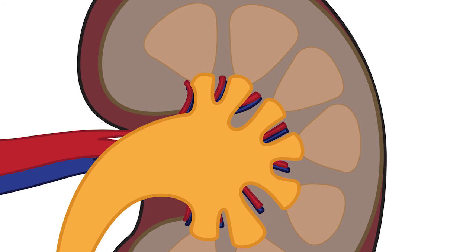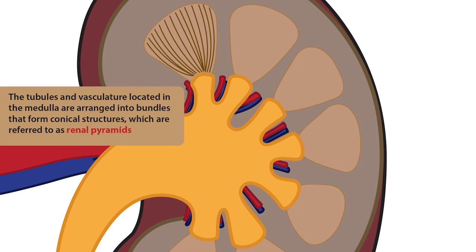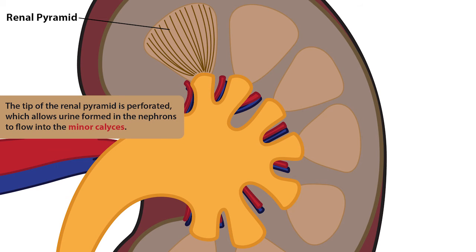The tubules and vasculature located in the medulla are arranged into bundles that form conical structures, which are referred to as renal pyramids. The tip of the renal pyramid is perforated, which allows urine formed in the nephrons to flow into the minor calyces.